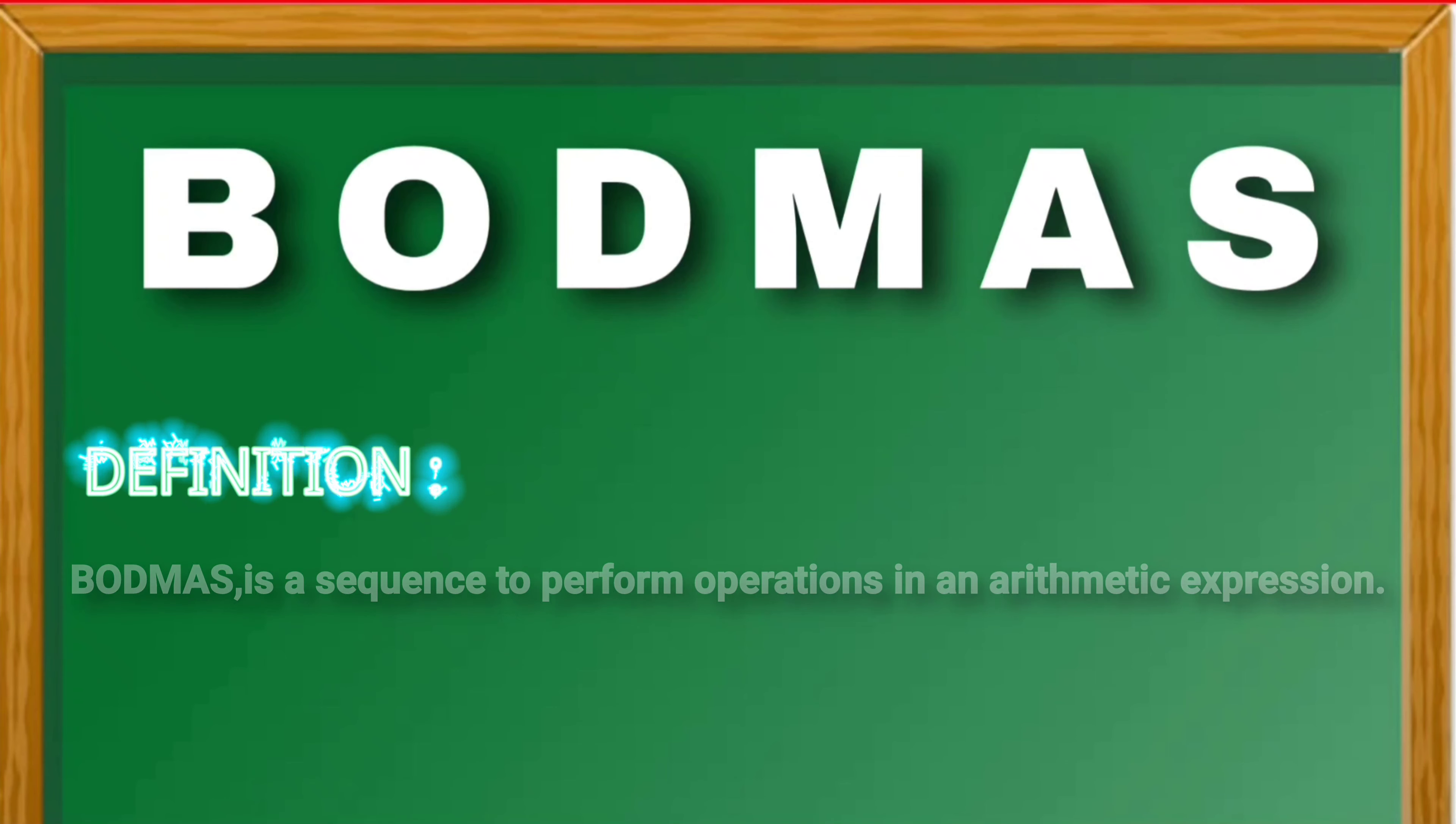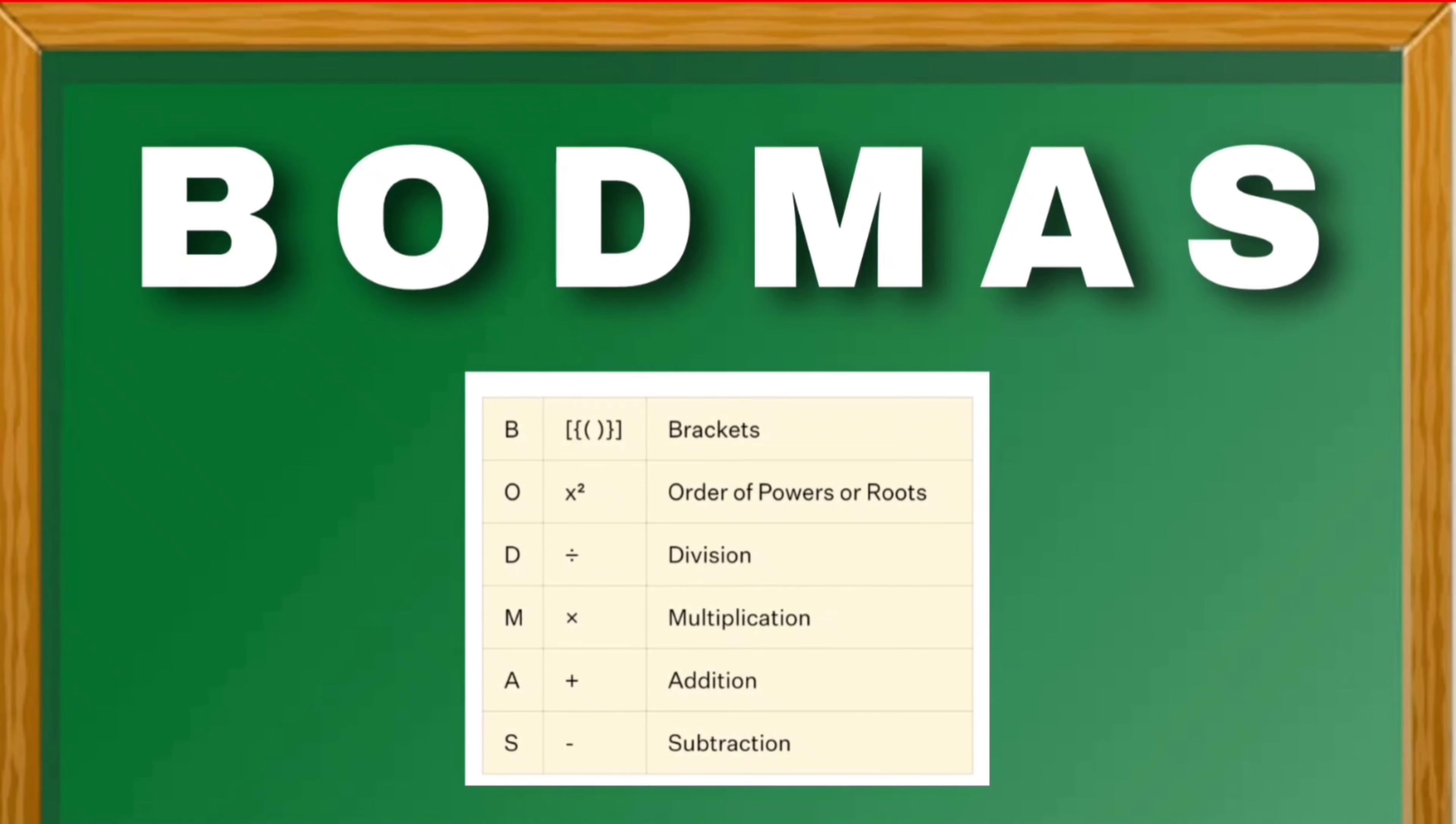Here in BODMAS, B represents brackets, O represents order of powers or roots, D represents division, M represents multiplication, A represents addition, and S represents subtraction.